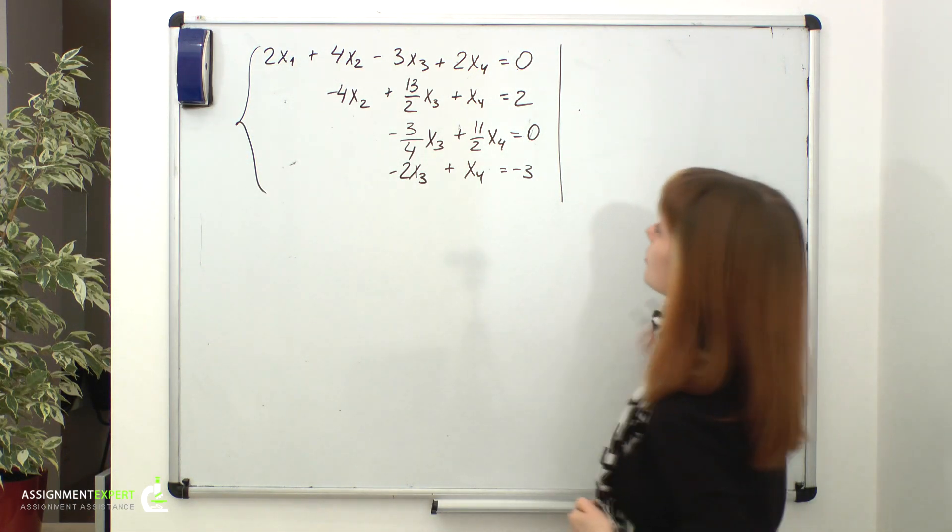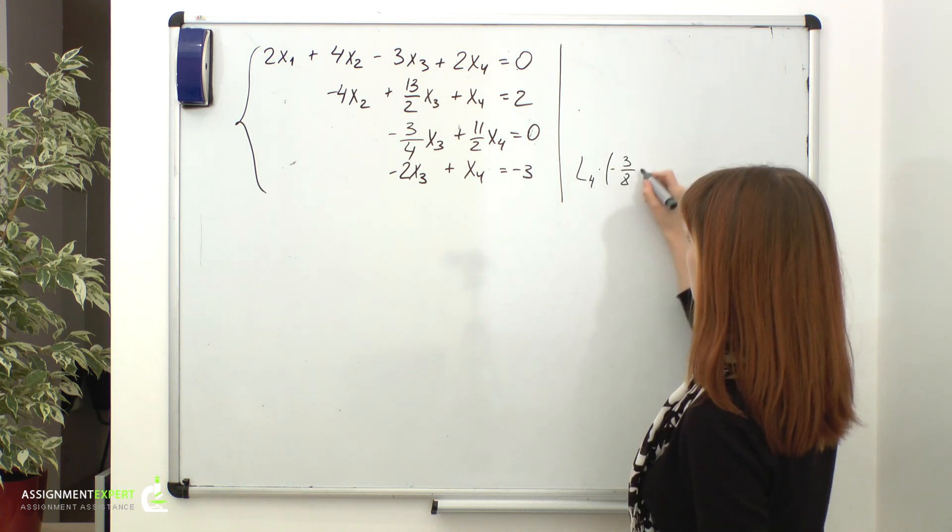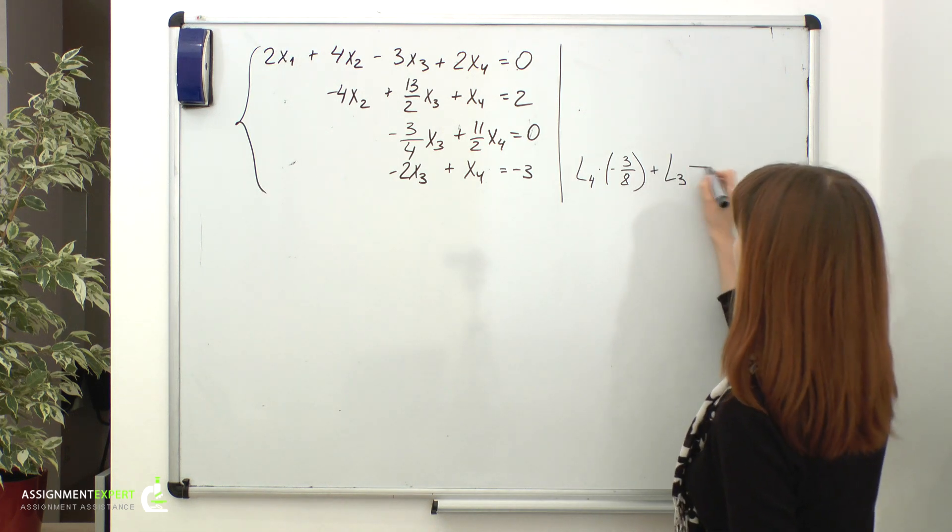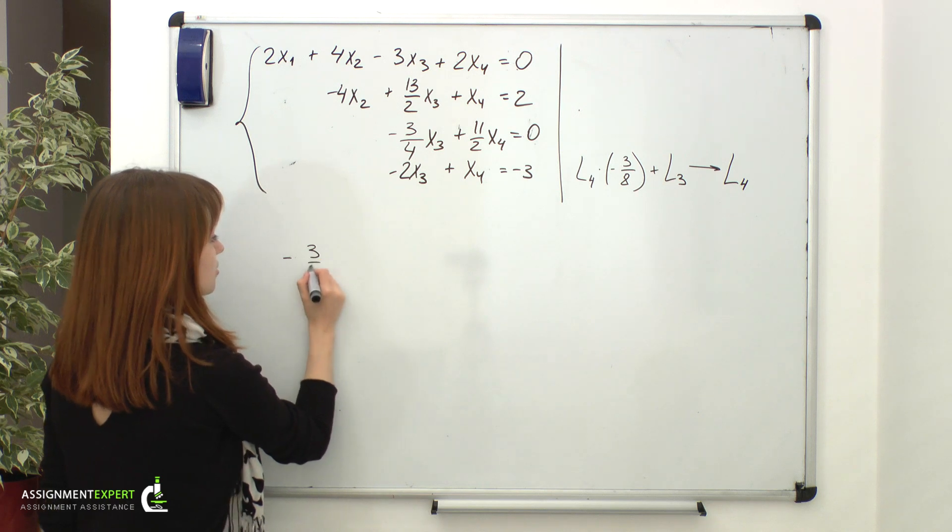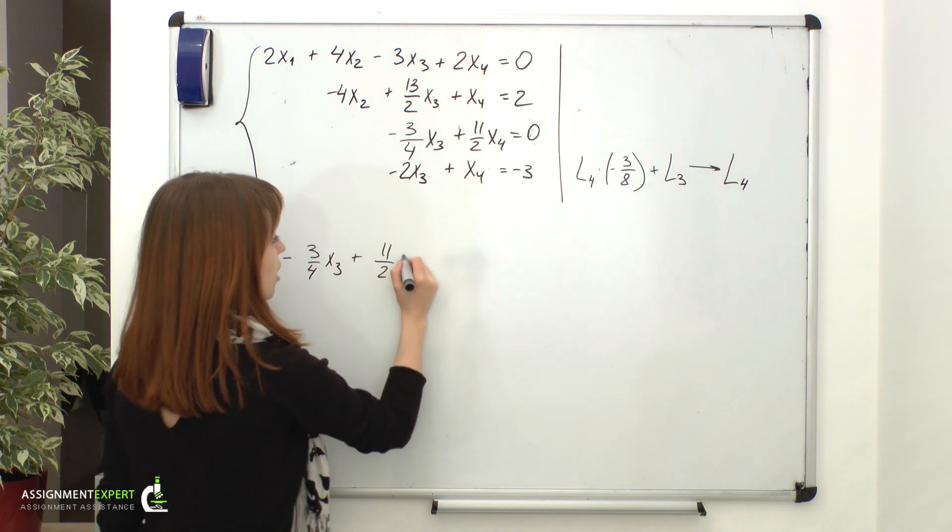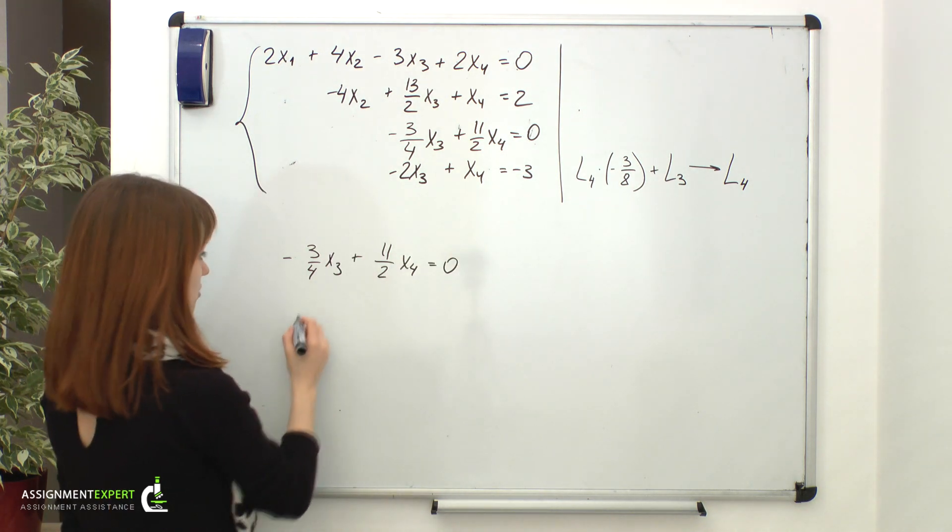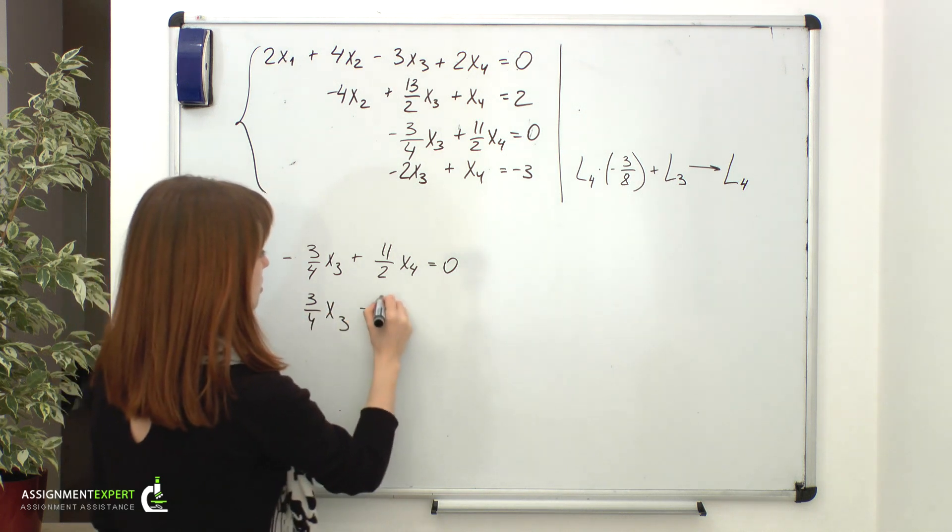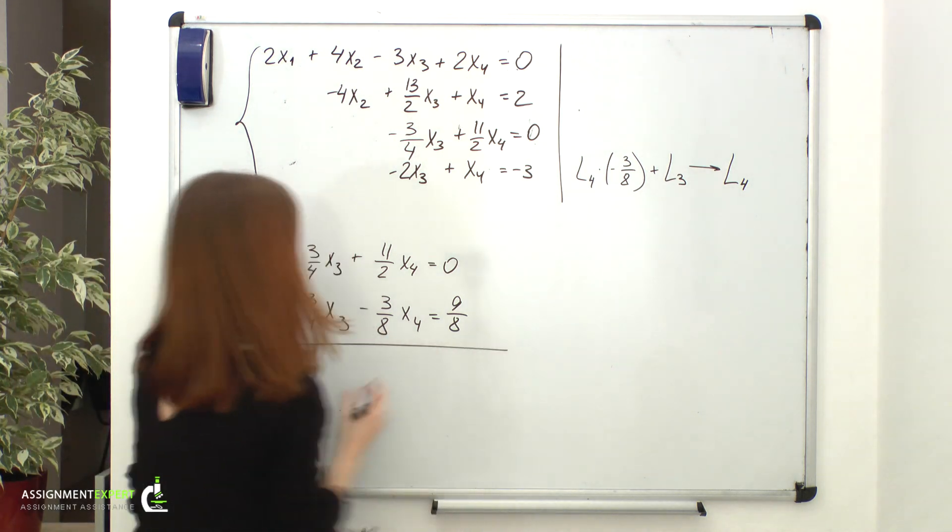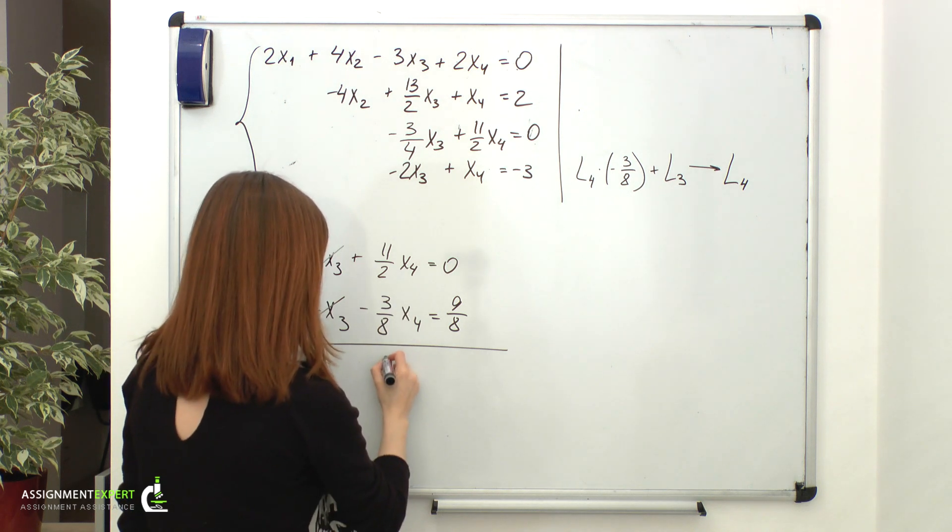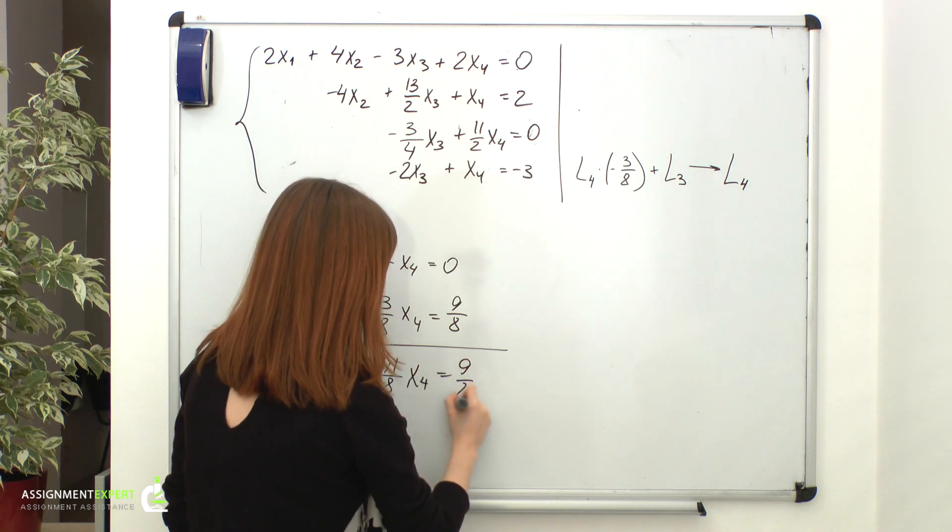My last step will be eliminating x3 from the fourth equation. So, I am going to take my fourth equation, multiply it by negative 3 eighths, add it to the third equation, and put the result into the fourth line. There is my third equation: negative 3 over 4 x3 plus 11 over 2 x4 equals 0. And then there is my fourth equation multiplied by negative 3 eighths: 3 over 4 x3 plus 3 over 8 x4 equals 9 over 8. And so, we have 41 over 8 x4 equals 9 over 8.